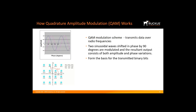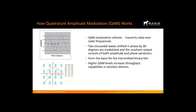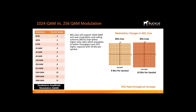By varying these sine waves through phase and amplitude, radio engineers can construct signals that transmit a higher number of bits per hertz. Systems designed to maximize spectral efficiency are always employing techniques to construct ever-denser QAM constellations to increase data rates. Higher QAM levels increase throughput capabilities in wireless devices. The new Wi-Fi 6 or 11AX standard incorporates 1024 QAM, with each symbol — a point on the constellation diagram — encoding a larger number of data bits, translating to better throughput at the physical layer.